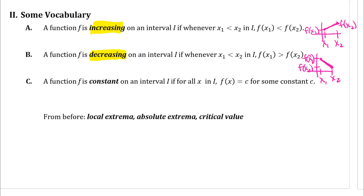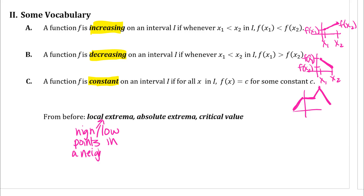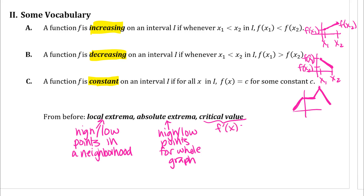A function can also be constant on a certain interval, and you could have a function that is increasing on some intervals, then constant, then increasing again, then maybe decreasing — doing different things on different parts of the graph. These are all talking about function behavior on certain intervals. Reviewing vocabulary: local extrema are high or low points in a neighborhood or small region of the graph. Absolute extrema are the high and low points for the whole graph. Critical values are places where the derivative is zero or does not exist but x is in the domain — places where you might expect local or absolute extrema. Extrema can also occur at endpoints of an interval where the extreme value theorem applies.